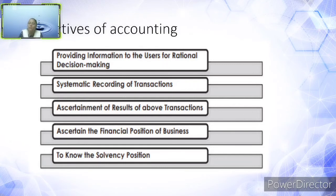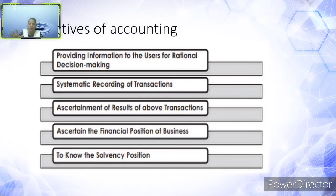Third, ascertainment of results of transactions — after recording transactions, the person has to maintain proper records and at the end of each accounting period, he has to see what the balance of each account should be. Fourth, ascertain the financial position of the business — based on this, the person has to prepare the final accounts, that is the trading account, profit and loss account, and the balance sheet. From the balance sheet, the person understands the exact financial position and the solvency position of the business.